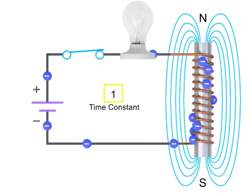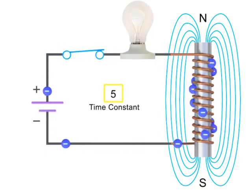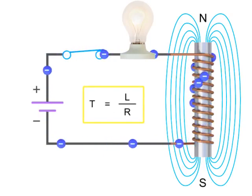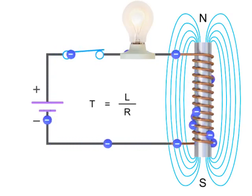The current will continue to flow and reach its maximum value after 5 time constants, or 5T, where T is equal to L divided by R. The light bulb will then be at its maximum brightness.